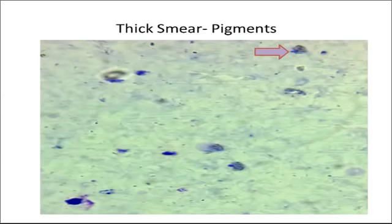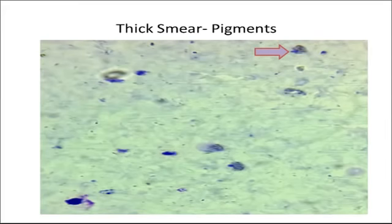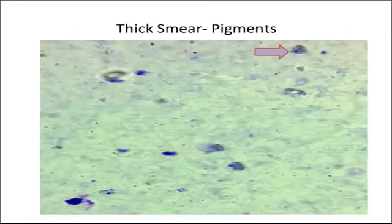First, why do we do thick and thin smears in malaria? In the thick smear, we get a large number of parasites because the smear is thick — there will be a large number of RBCs and naturally more parasites. This is intended to detect whether there is a malaria parasite in the blood. The thin smear is used to identify the species.